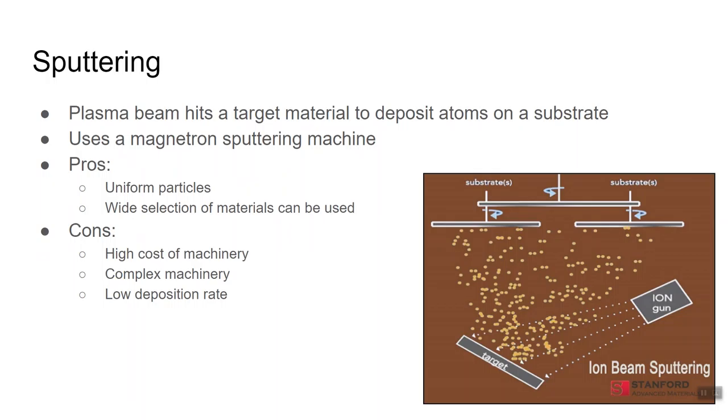Sputtering. Sputtering involves hitting a target material with a beam of plasma, which erodes the surface of the target material. The ejected atoms are then deposited on a substrate for collection. This process is performed in a magnetron, which provides a vacuum environment to reduce contamination from impurities in the air.